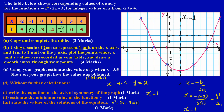They're asking us to estimate the minimum value of the function. The minimum means how far down the graph came. From the bottom of the graph, draw a horizontal line to the y-axis — it touches at negative four. Therefore the minimum value is negative four.